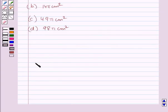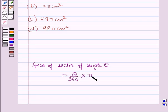Now, before starting the solution of this question, we should know a result. And that is: area of the sector of angle θ is equal to θ/360 × πr².